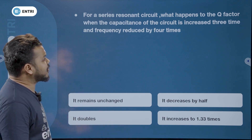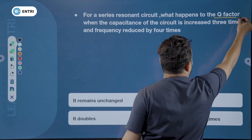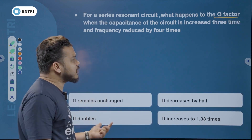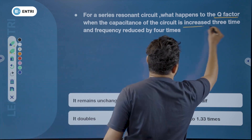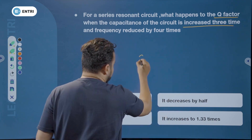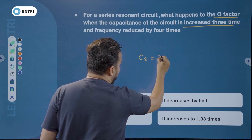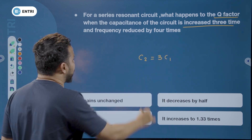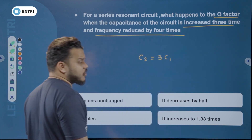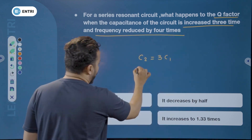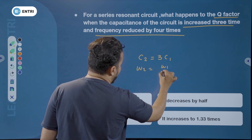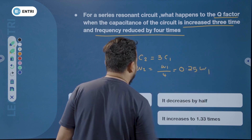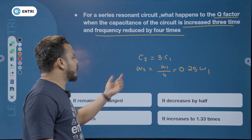For a series resonance circuit, what happens to the quality factor when the capacitance of the circuit increases three times? C2 equals three times C1, and the frequency is reduced so that omega 2 equals 0.25 omega 1.